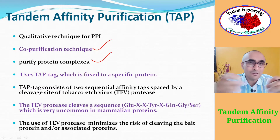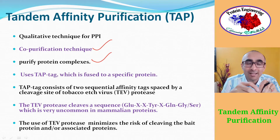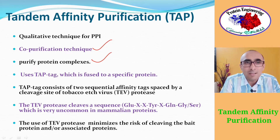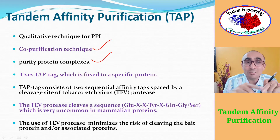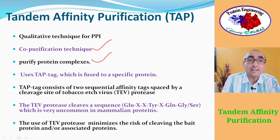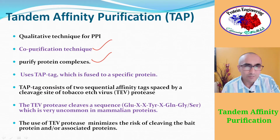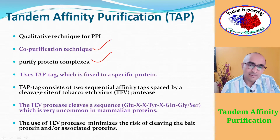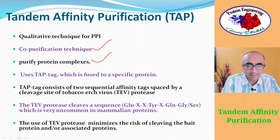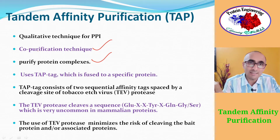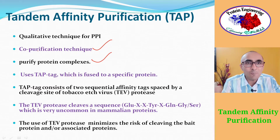You break the cell membrane and take out the protein complex. But another problem is that there are many proteins in the cell — how do you identify your protein of interest? In order to recognize your protein, you add a tag that is not present in any other cellular protein. This is called the TAP tag. The gene for the TAP tag along with the protein of interest is cloned into a vector, which is then transformed into the cell.